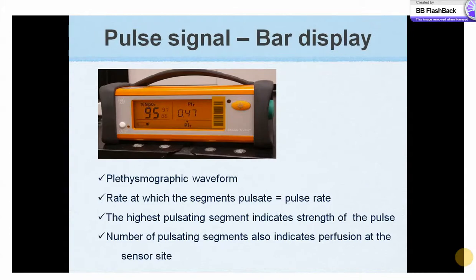When the pulse is presented as bar graphs, the rate at which the segments pulsate equals the pulse rate. The highest pulsating segment indicates the strength of the pulse, and the number of pulsating segments also indicates perfusion at the sensor site — the more segments, the stronger the perfusion. If the bar display is less than 50 percent, it indicates poor quality signals.